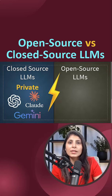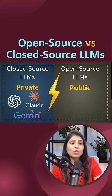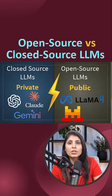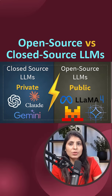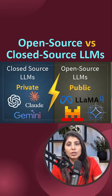Open source LLMs, on the other hand, are publicly available models. The weights and the training code are shared publicly. For example, Llama 4, Mistral, Gemma, and Falcon are open source LLMs, and we can download them and run them locally on our machine.